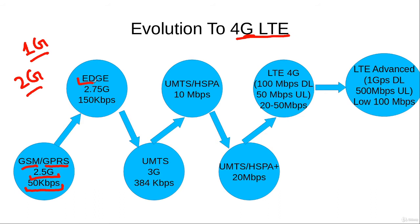EDGE technology was then introduced to further enhance the data rates of the GSM system, and we call it 2.75G. In the case of EDGE, the average data rate a user experienced under normal circumstances was around 150 kilobits per second. But the demand for more and more data rate kept on increasing.